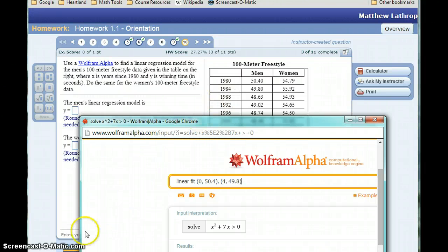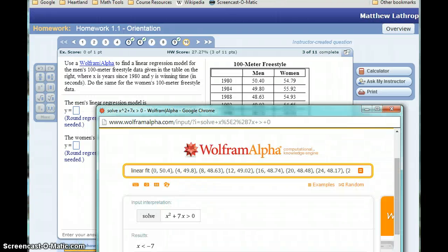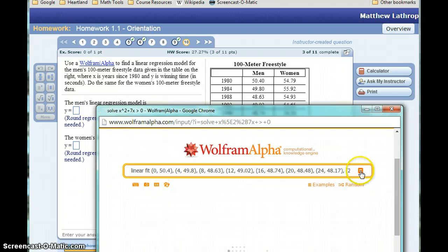I'm going to go ahead and pause the video here where I type in the rest of this data, just to skip ahead. So I've gone ahead and finished typing in this data. My x coordinates representing the year since 1980, my y coordinate is just that list of values under men. Started it off with that command linear fit, and then go ahead and evaluate this, either by hitting that equals button or pressing enter on your keyboard.